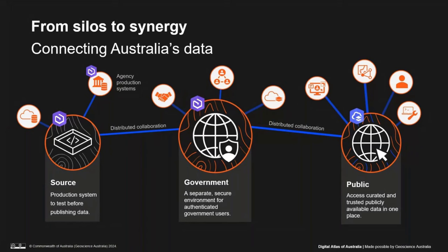The Source environment is where government agencies can upload and link their data and develop and test maps and applications before publishing them — it is our testing ground and sandpit. The second is Digital Atlas for Government, a secure environment for authenticated government users to explore and analyze data and access a full suite of GIS tools, offering the same functionality you would see using GIS software on your desktop. It is also a collaboration space for creating and sharing maps and apps across agencies. The public-facing Digital Atlas allows anyone — government, business, academia, and the community — to access location data from trusted sources, with all environments providing non-technical users the tools they need to use data and create their own maps easily.